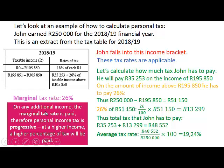On any additional income, the marginal tax rate is paid. Therefore, personal income tax is progressive — at a higher income, a higher percentage of tax will be paid. You can calculate that if his income were 280,000 rand, the average tax rate would be higher than 19.24%.